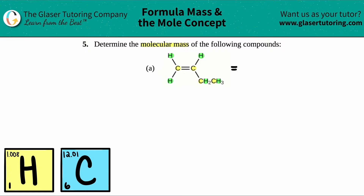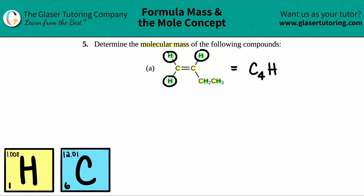It doesn't matter which element you start with — I'll start with carbon. I have one carbon here, a second carbon, another carbon down here, and another carbon, so I have a total of four carbons. Now let's group together the hydrogens: I have one, two, three total over here. Then I see a two here — so two hydrogens — and a three over here, giving five hydrogens from those two groups. Combined with the three, I have five, six, seven, eight total hydrogens.